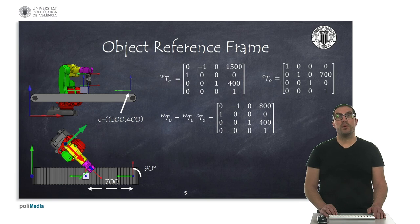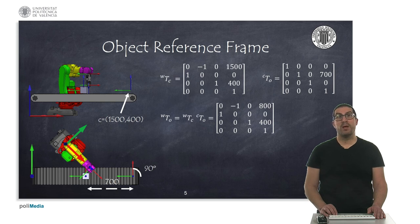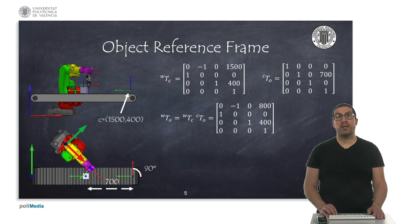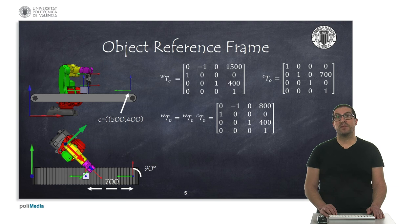Next, we intend to compute the position of the object's reference frame with respect to the wall frame. Before that, we need to compute the transformation matrix of the conveyor belt with respect to the wall frame T_wc. We observe that the conveyor reference frame is rotated 90 degrees with respect to the z-axis, and shifted 1500 mm in x and 400 mm in z — the height of the conveyor belt.